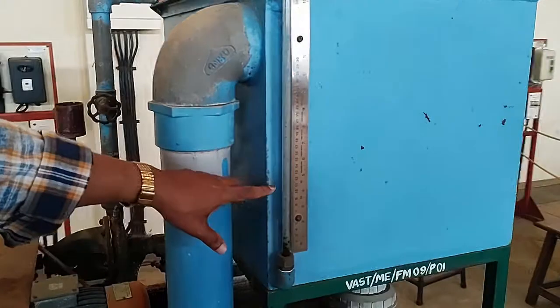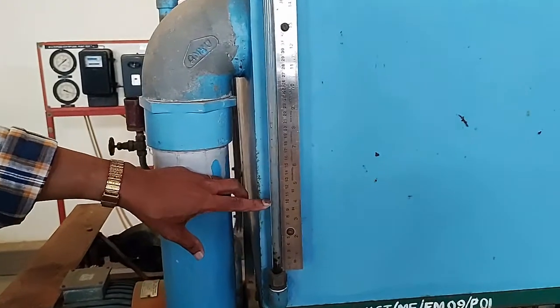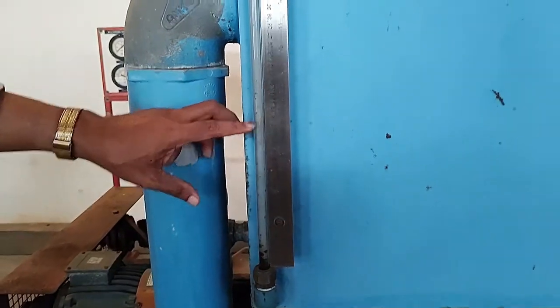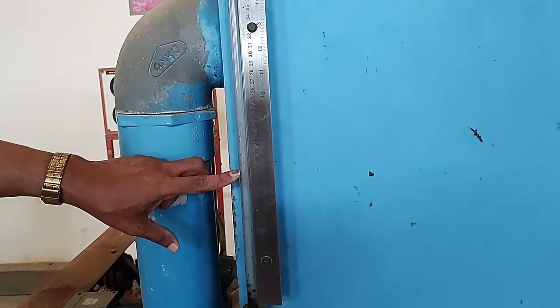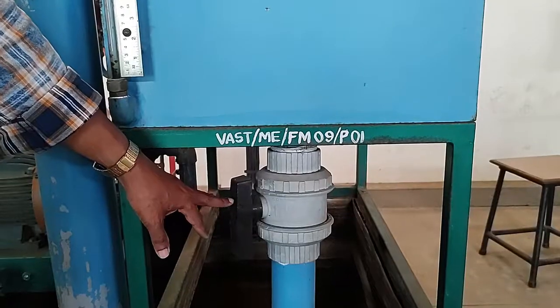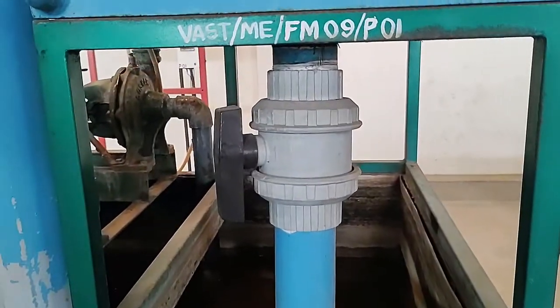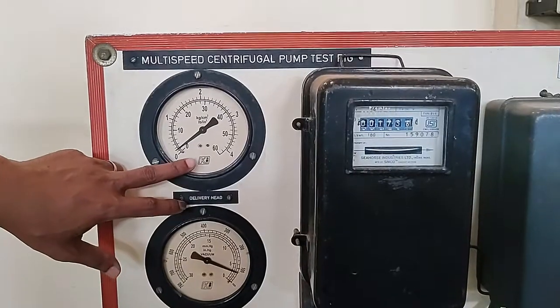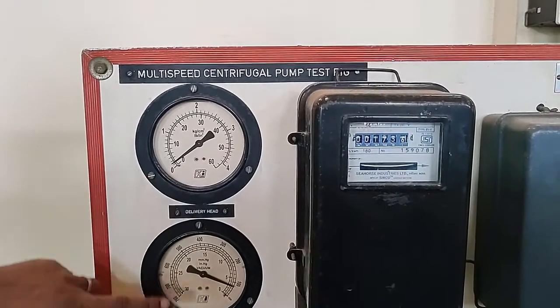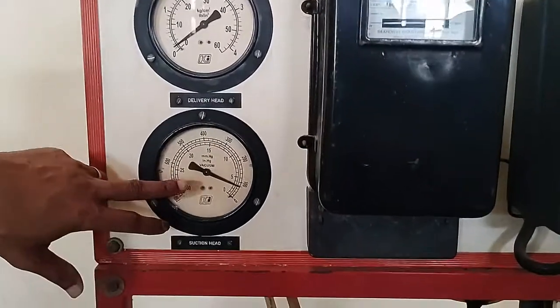This tube is used to measure the level of water inside the tank. This is the drain valve, the delivery head gauge, and the suction head gauge.